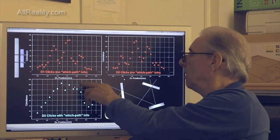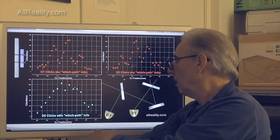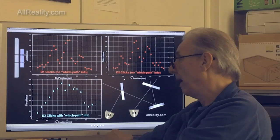And of course, D2 and D1 have no which path information. Only D3 and D4.